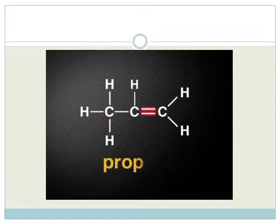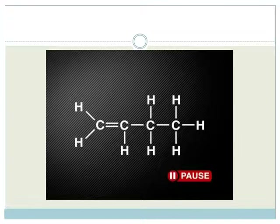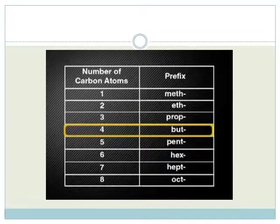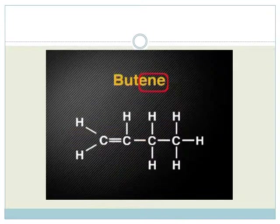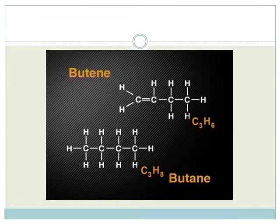Now we look at the bonds. If the carbons were joined with single bonds, this would be propane. But because this has a double bond, it belongs to the alkenes — so this molecule is propene. Try to follow these two easy steps to name this compound. First, look at the number of carbons for the first part of the name, followed by the part of the name that tells us how the carbon atoms are bonded. Four carbon atoms make the name start with bute, and the double bond means that the molecule's name ends in ene. Butene may sound similar to butane, but butene has fewer hydrogen atoms than butane — butene is an unsaturated hydrocarbon, but butane is a saturated hydrocarbon.